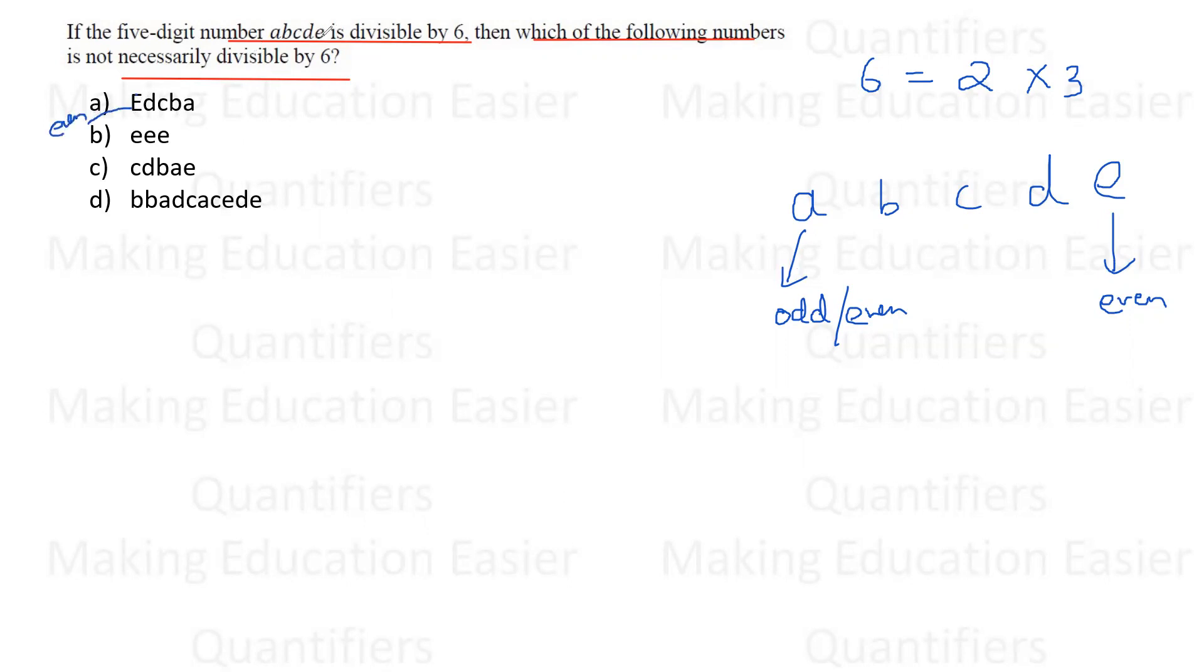Because agar yeh number six se divide ho raha hai, toh yeh joh E hai humara, yeh toh pukka even hai. Or ab joh mein reverse order meh number likhun ga, toh matlab joh pehla wala digit hai, mera E, wotoh even hai.